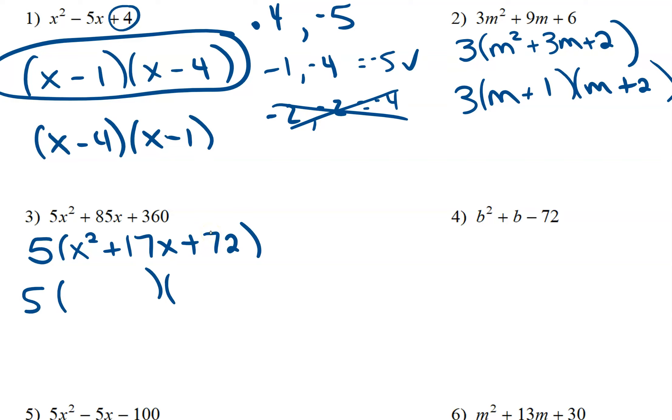And now our a is 1. So once a is 1, we can just draw our parentheses and say x times x gives us that x squared. Now we need things that multiply to give us 72 and add to give us 17. So we could try 1 and 72. Nope. 2 and 36. No. 3 and 24. 4 and 18. We're not there yet. We're trying to get 17.